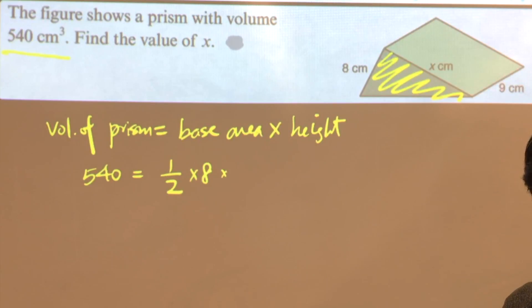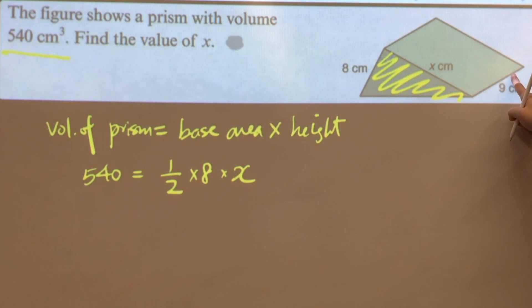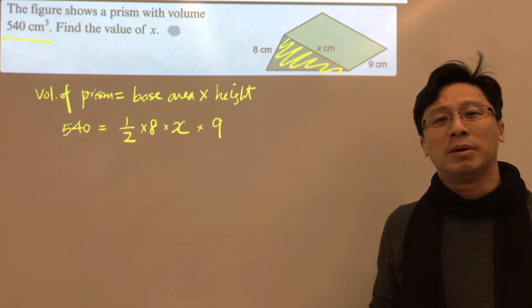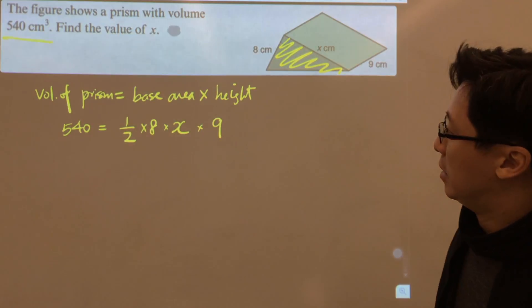8 times x, and the height of the prism will be this 9 cm. Multiply this by 9, and now